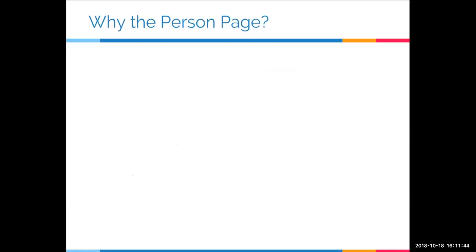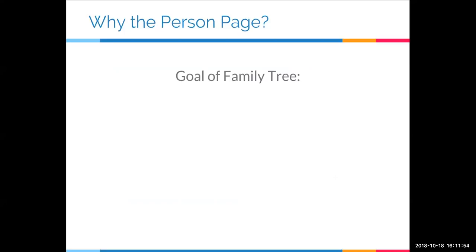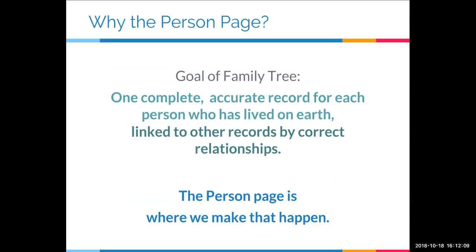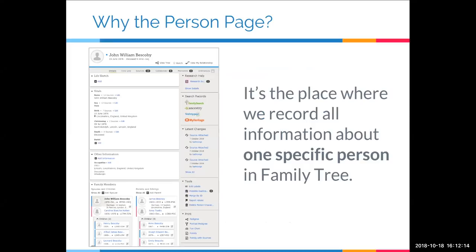I want to set some context to explain why a webinar like this might be helpful. It has to do with the goal of Family Tree, which is to have one complete accurate record for each person who has lived on the earth, linked to other records by correct relationships. The person page is where we make that happen — it's the place where we record all information about one specific person in Family Tree. Person pages are really the building blocks of Family Tree, because without them there'd be nothing for tree views or searches.